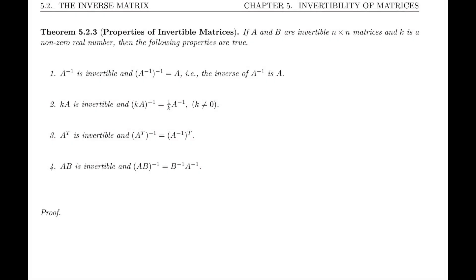Welcome back. In this video, we're going to list and prove properties of invertible matrices. We've listed four properties here in the form of theorem 5.2.3. All these properties hinge on the premise that A and B are invertible n by n matrices.